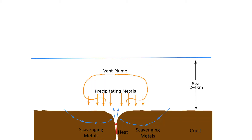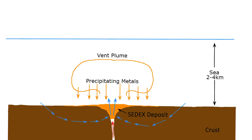This mineral-rich brine is ejected by the vent into the surrounding seawater. The brine chemically reacts with the seawater, causing the dissolved minerals to precipitate out of the solution and settle to the sea floor. The graben caused by the extension faulting that gave rise to the venting in the first place now acts as a depression for some of these metals to accumulate.